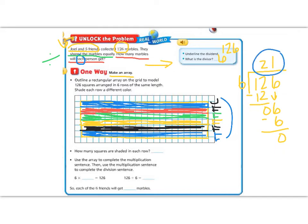And each person has 21 in their row. So each row has 21 squares that are shaded. We can use this array to show that six times 21 is 126, which is our first math fact here. Six times 21. So that means if six times 21 is 126, then 126 divided by six is 21. So each one of the friends is going to get 21 marbles.